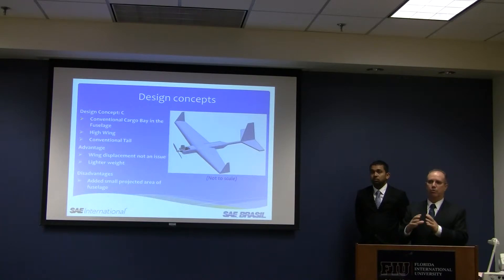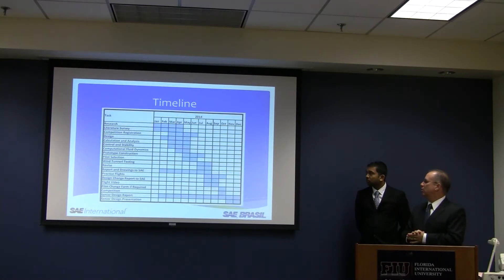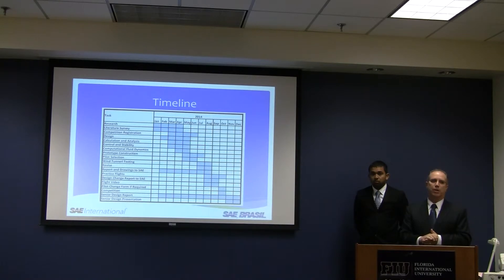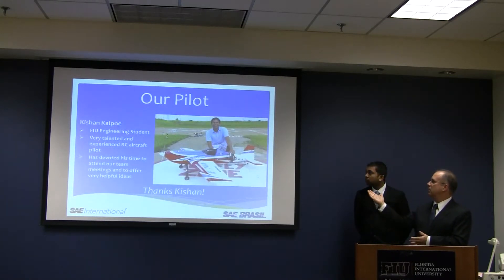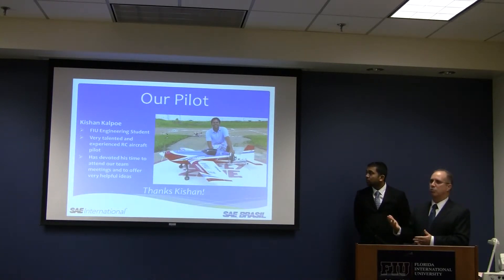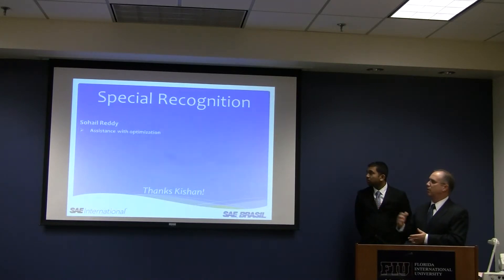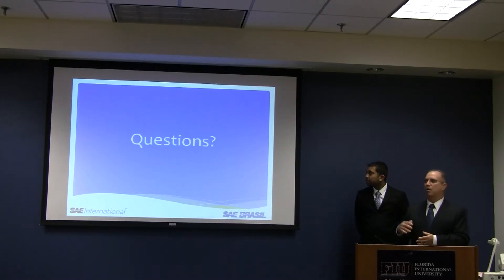We're also trying to minimize the frontal surface area, making it as sleek as possible so that the thrust is unobstructed. Our timeline — we're pretty much on track right now. We plan on building this airplane in June and would like to start flying it in July. We actually found an FIU pilot — his name is Keyshawn Kelpo — and he's been attending our team meetings and providing thoughts and ideas. We also want to give special recognition to Sohail Brady, who has been helping us with some of the optimization ideas for the aircraft.